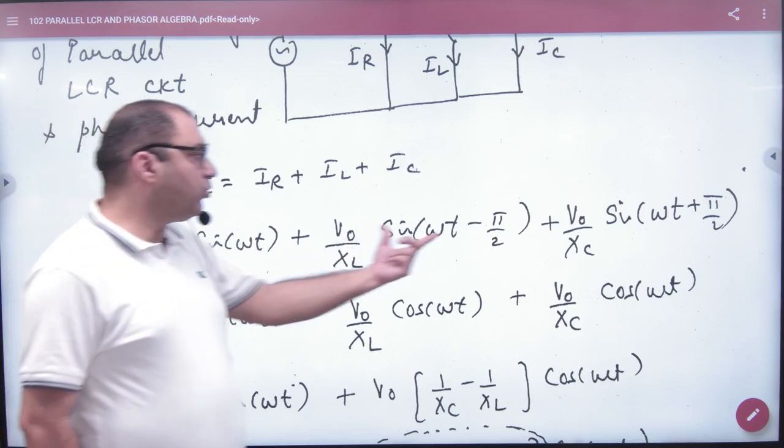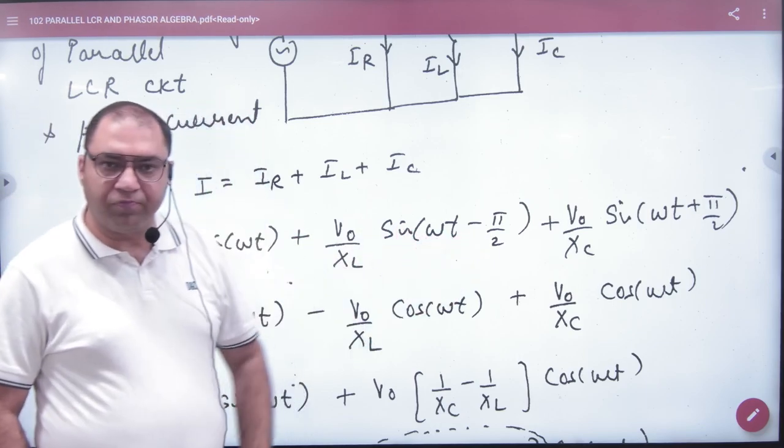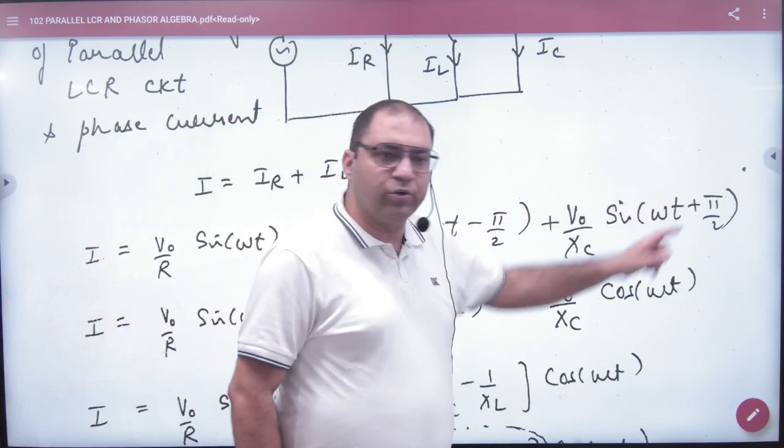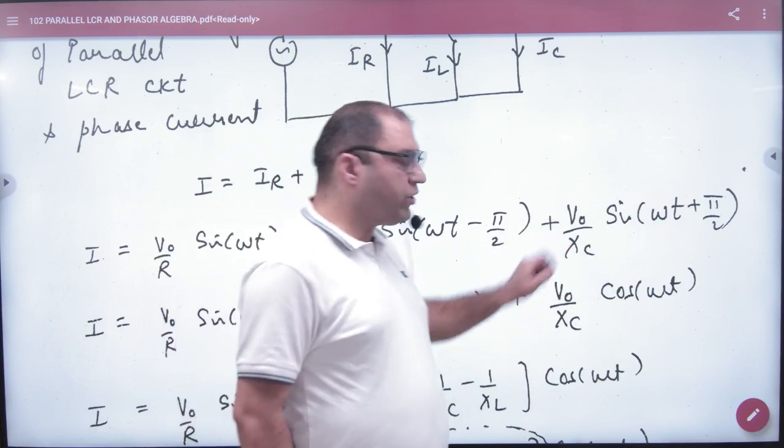But the current in the inductor is behind by an angle of π/2, and I₀ = V₀/X_L. In the capacitor, the current is ahead by an angle of π/2, with I₀ = V₀/X_C.